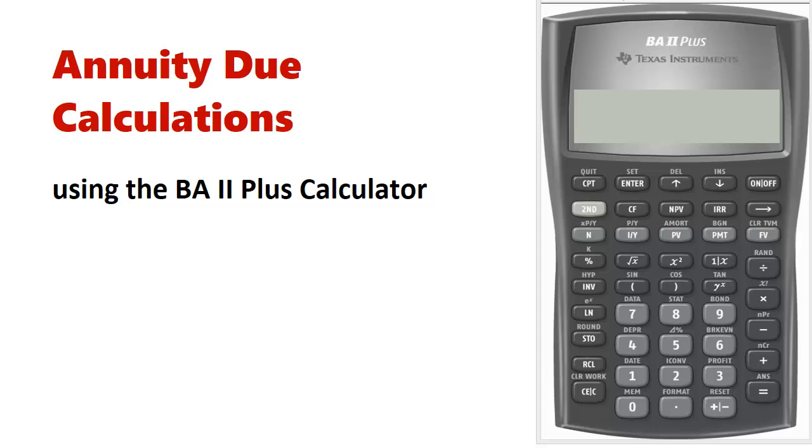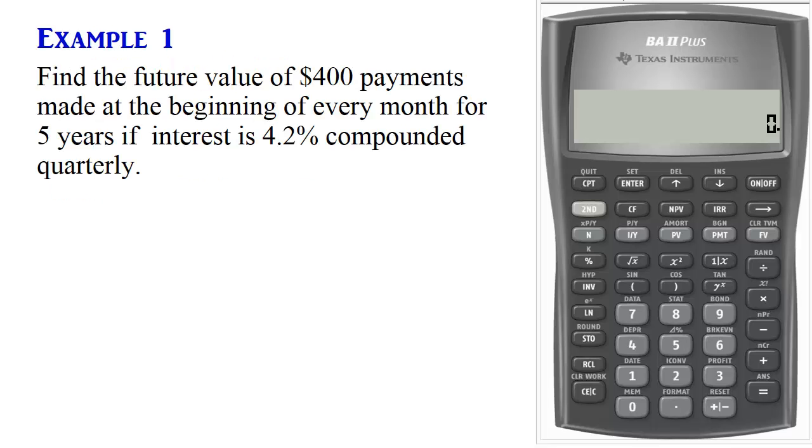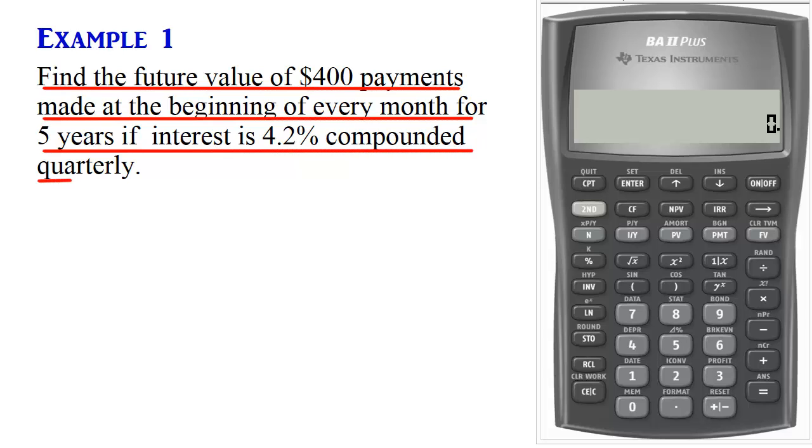Let us look at an example. Example 1. Find the future value of $400 payments made at the beginning of every month for five years if interest is 4.2% compounded quarterly.